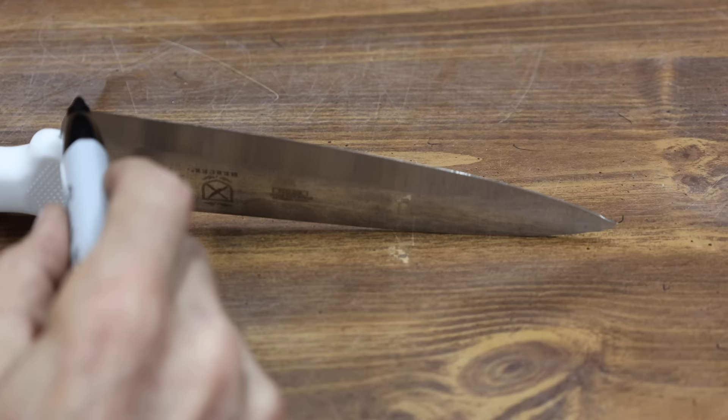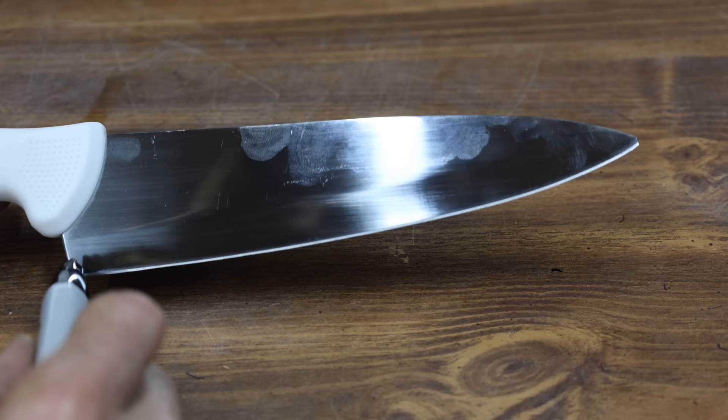Before we sharpen the knives, I'm going to use a permanent marker on the knives so we can get a better look at the blade edge during the sharpening process.